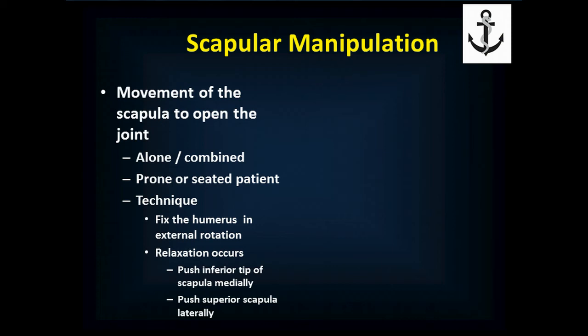Scapular manipulation works really well combined with Stimson's technique or with the patient seated upright. Externally rotate the arm and hold it in that position — having someone else hold it is very helpful. As the arm becomes fatigued and relaxes, push the inferior tip of the scapula — the shoulder blade — medially toward the spine, while at the same time reaching up and pulling the superior scapula laterally. That opens up the shoulder and glenohumeral joint, and the humerus falls right back in.